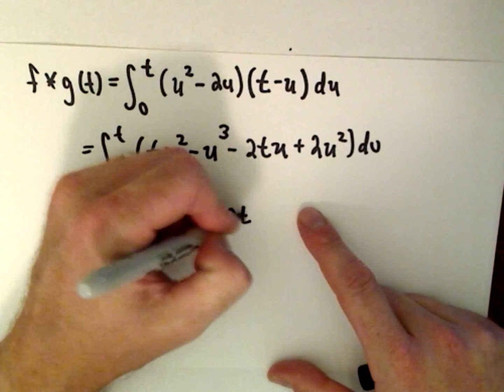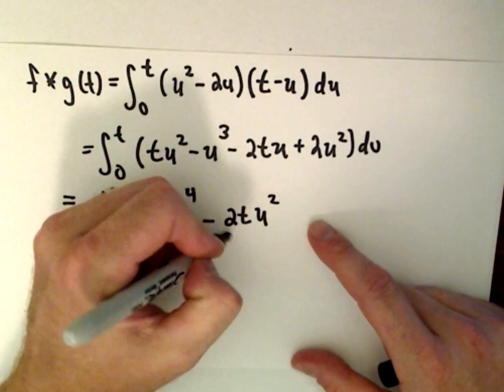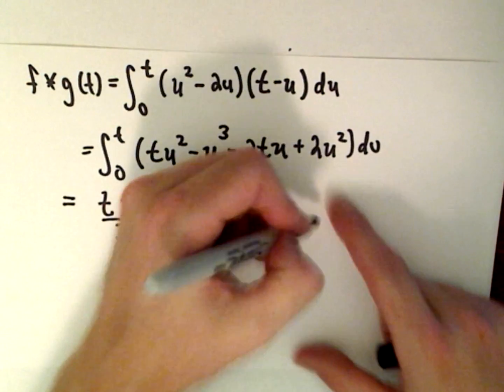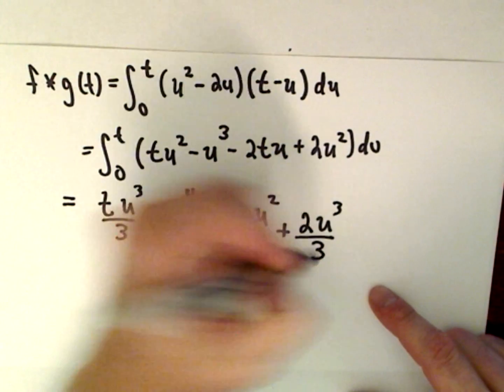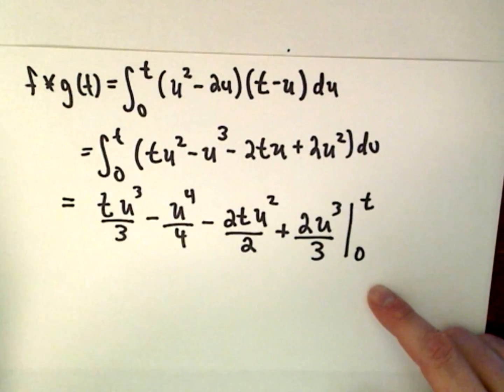We're integrating with respect to u, so we'll have u squared over 2. Plus 2u squared, so we integrate that, we'll have 2 then u to the third over 3. And again, we're integrating that from 0 to t.